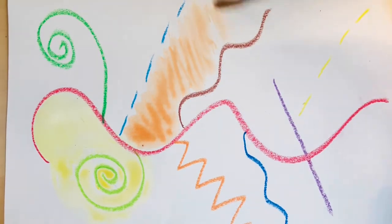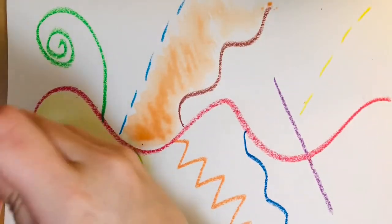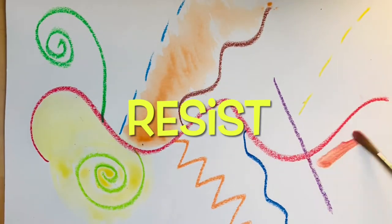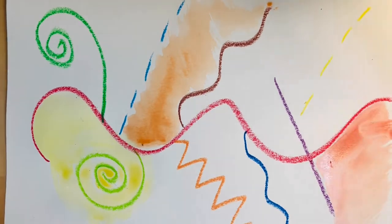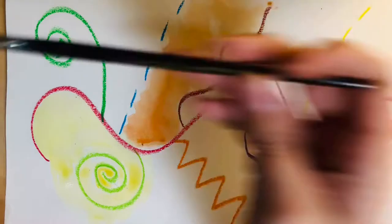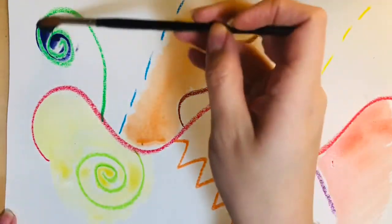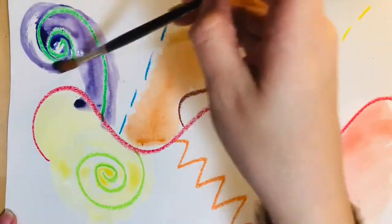We see that my paint did not cover my lines, and that is called resist. So you're going to want to change the color up a bit. Remember that the less water you use, the brighter and darker your watercolor will get.